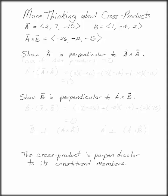A minute ago, we found out that the cross product of A and B was negative 26, negative 14, negative 15. We can show that A is perpendicular to this cross product. Two vectors are perpendicular if their dot product is zero.